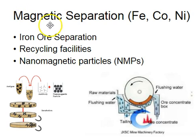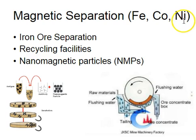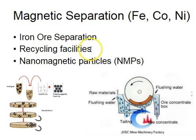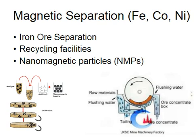One of the ways that we can separate some metals is we can use magnets. Magnets work very well for iron, cobalt, and nickel — these are three physical properties that describe those three pure substances. Some of the processes that use magnetic separation include iron ore processing and recycling facilities. We can also use nanomagnetic particles to separate tiny particles like those in your blood.